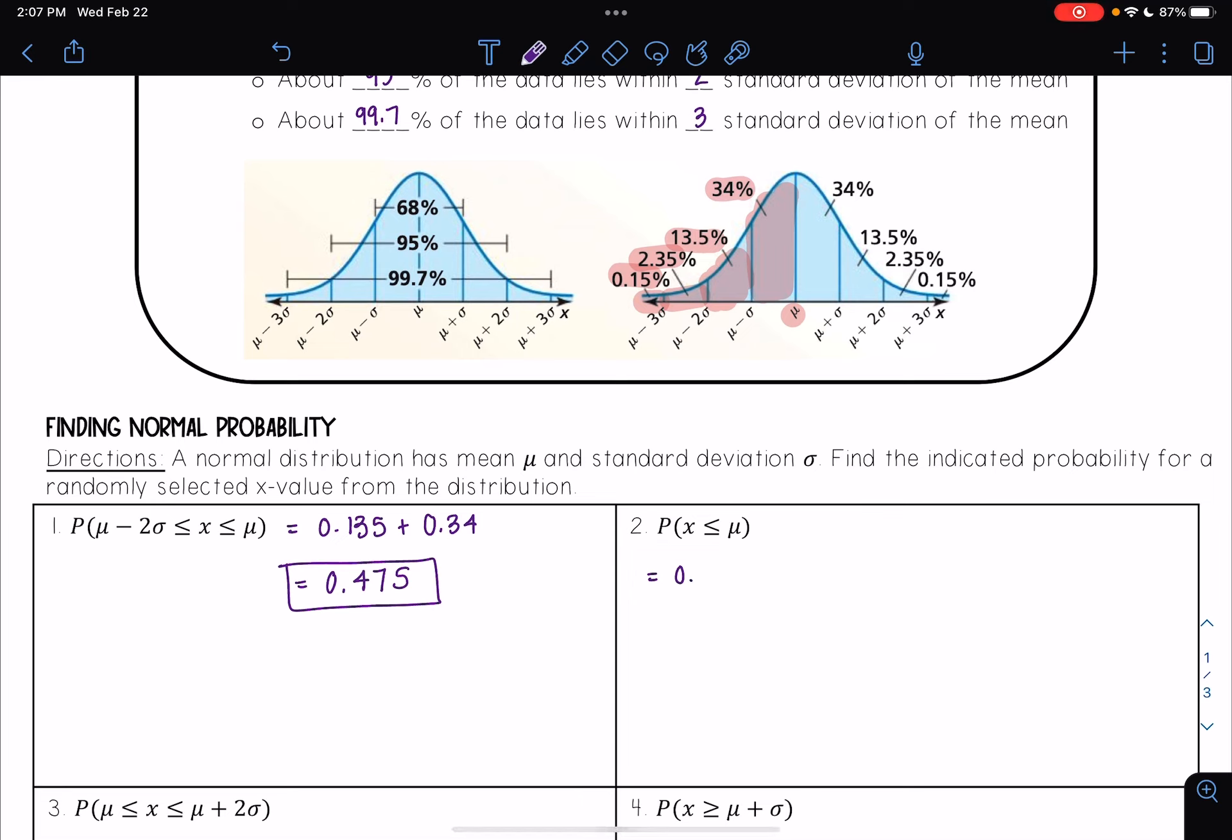And so I have 0.15%. If I change that to a decimal, I have to move it two places. So it's going to be 0.0015 plus 0.0235 plus 0.135 plus 0.34. And so when I add all those together, I get 0.5, which makes sense because this is half of what we see in the picture, because we know that the mean is in the center.